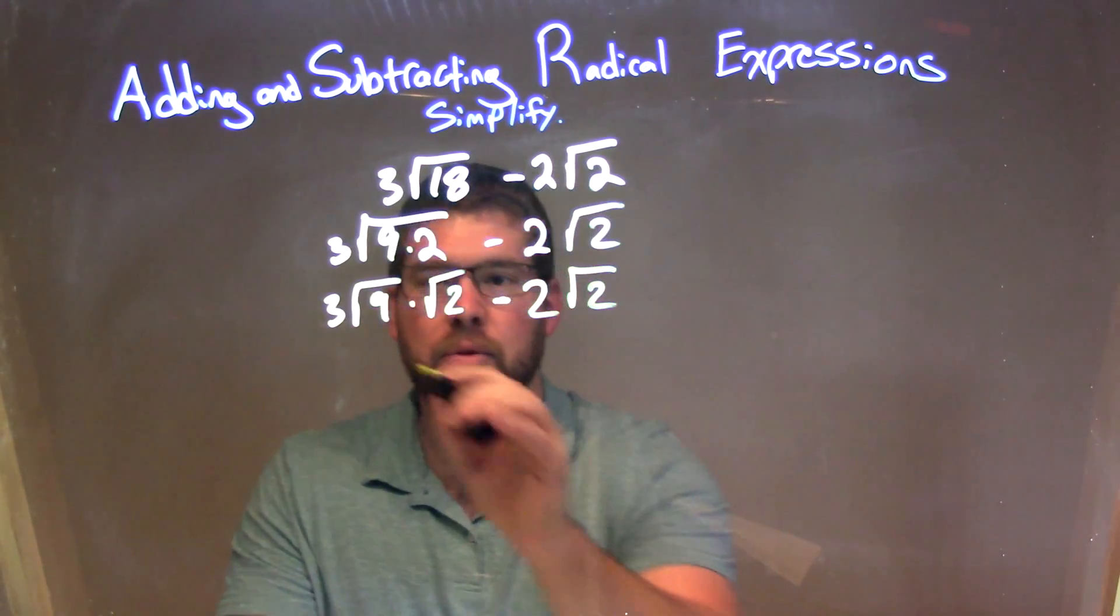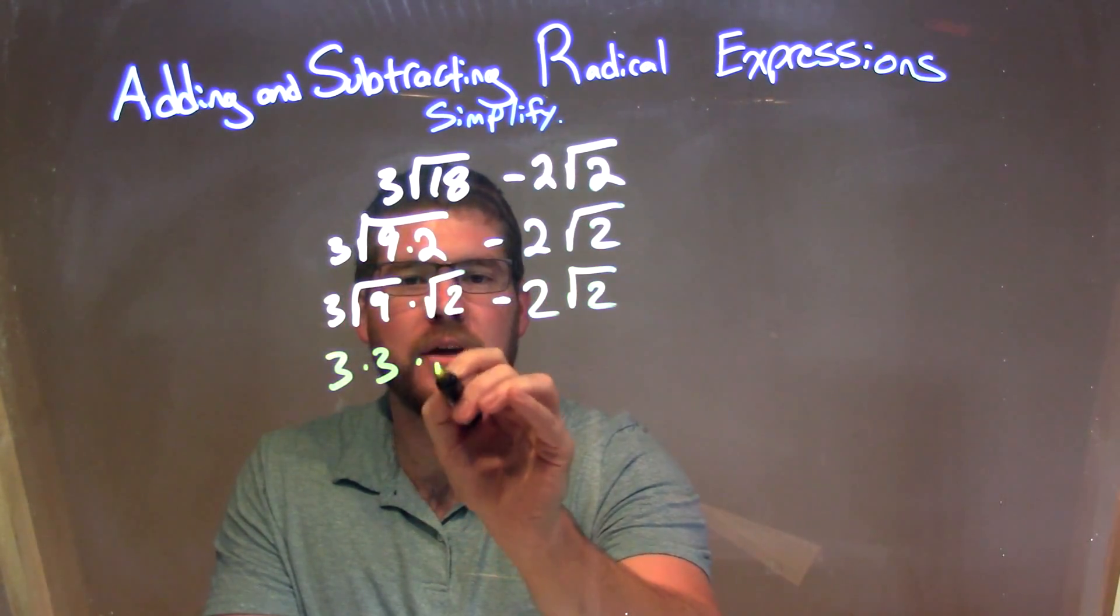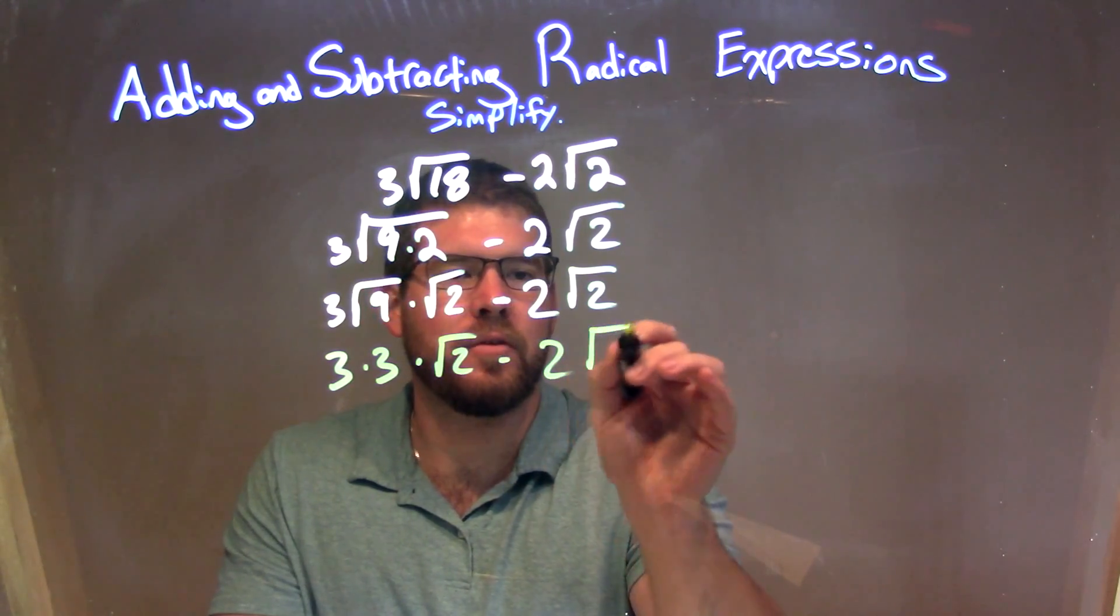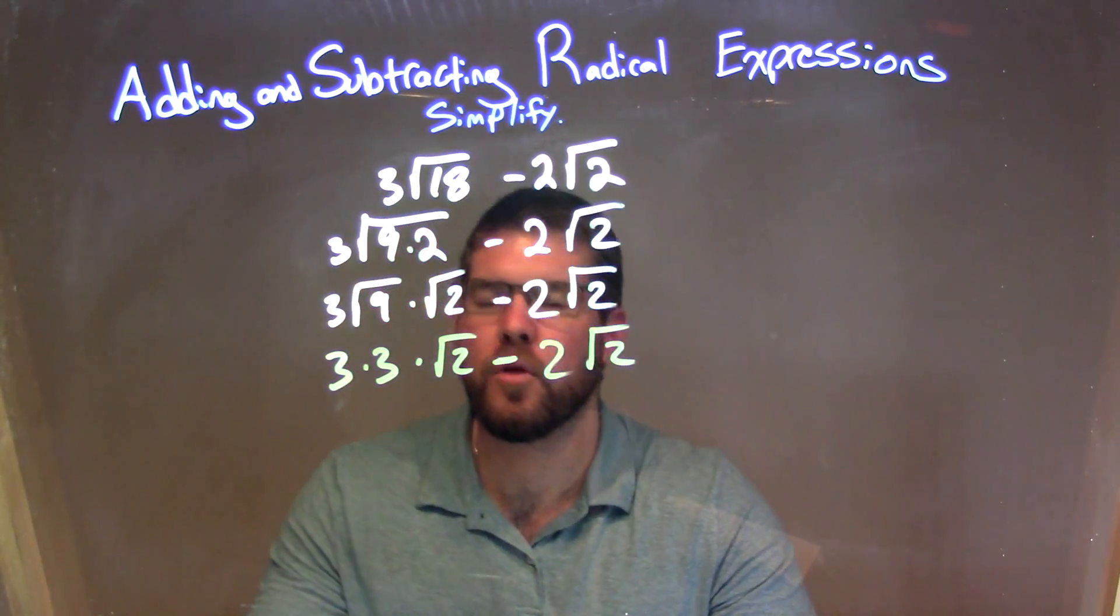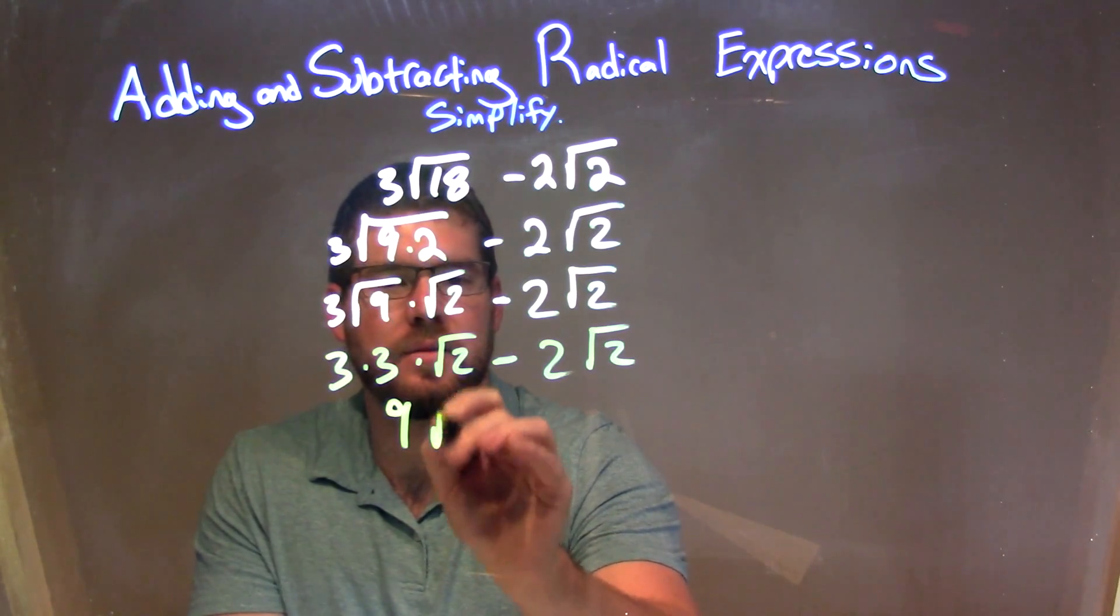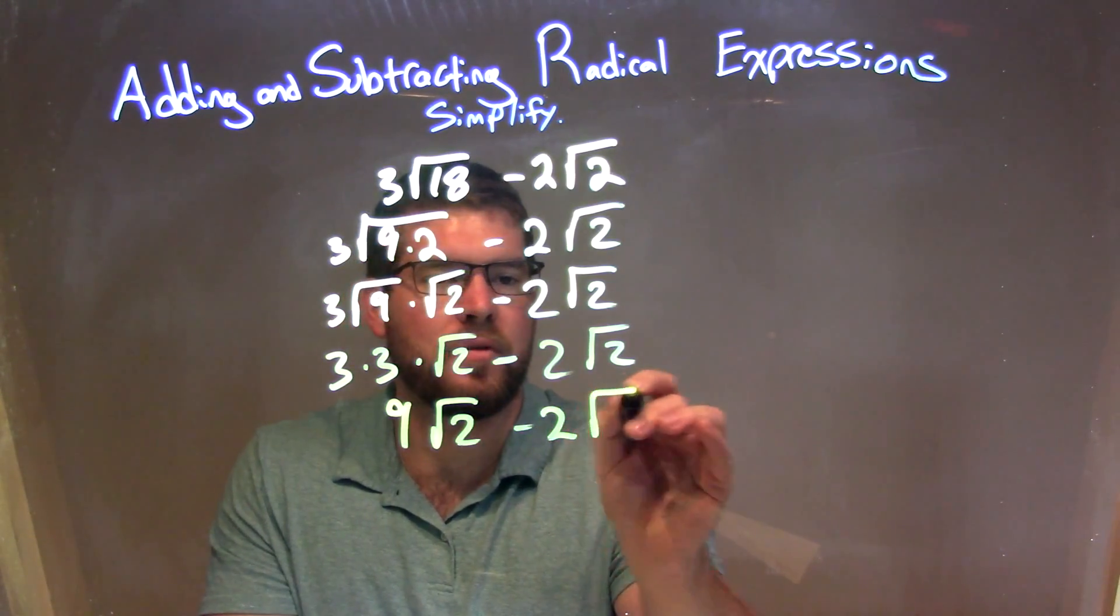Square root of 9 is pretty easy, that's a 3, so we have 3 times 3 here times the square root of 2 minus 2 square root of 2. Well, 3 times 3 is just 9, so we have 9 here times the square root of 2 minus 2 square root of 2.